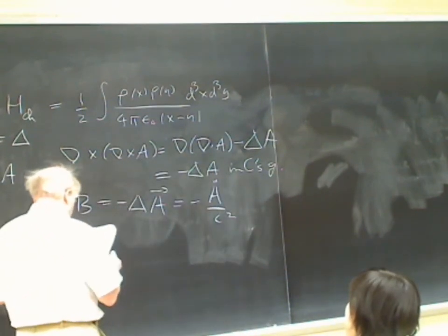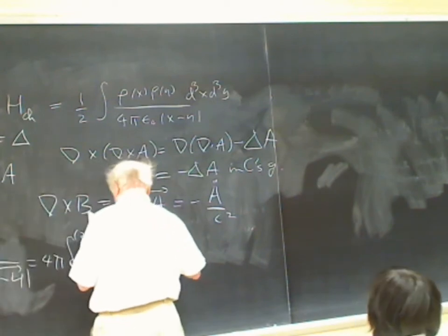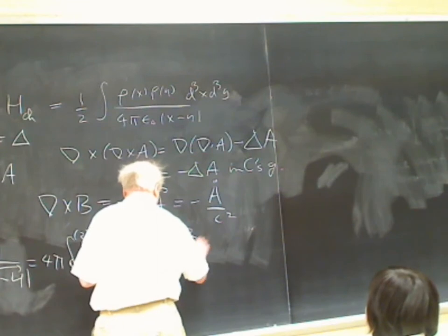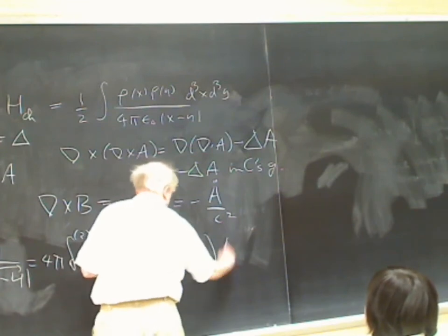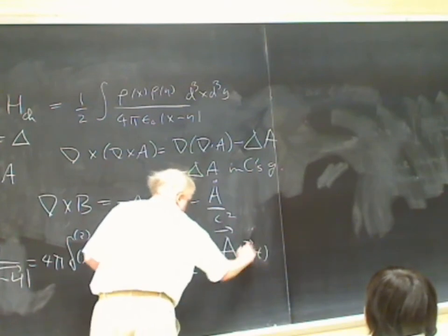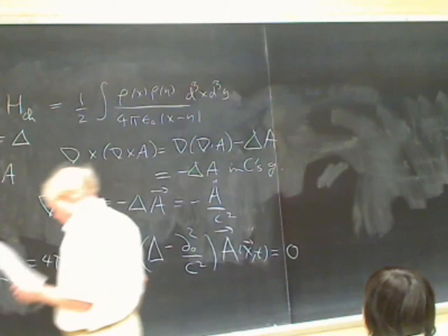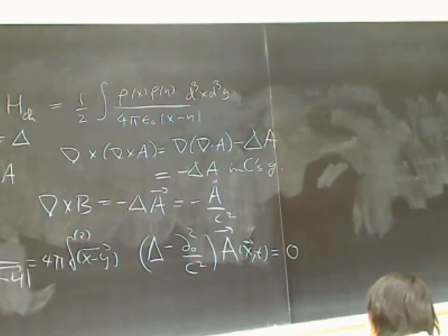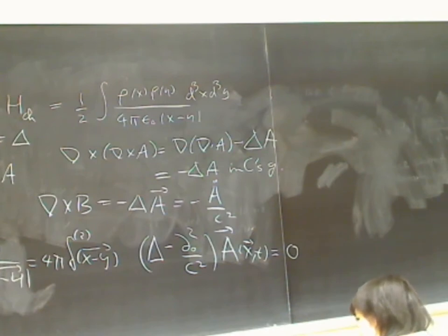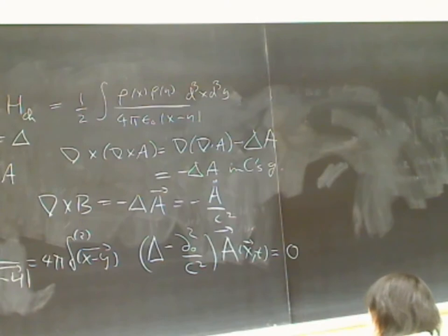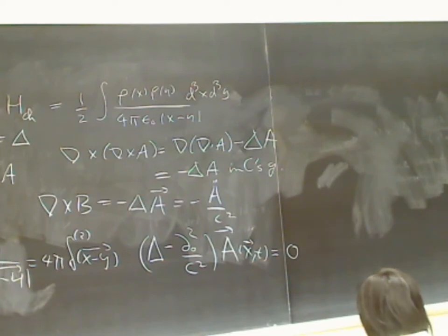Combining these gives the wave equation: (∇² − ∂²/∂t²/c²) A(x,t) = 0. This is the analog of the scalar field equation ∂_μ ∂^μ φ = μ²φ with mass μ = 0, because the photon has zero mass.